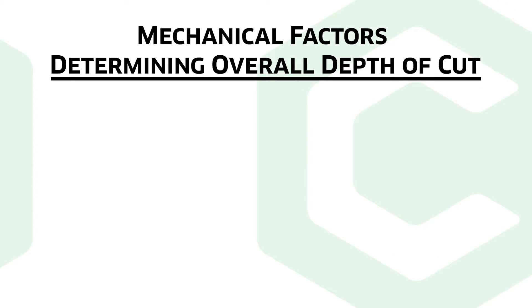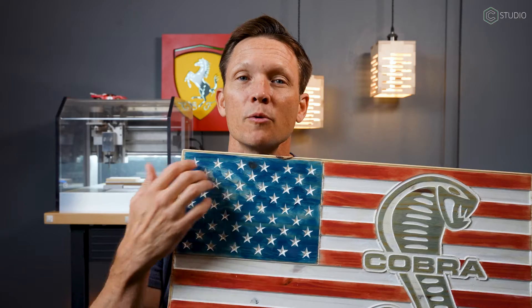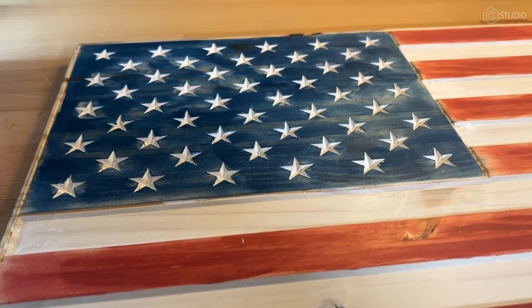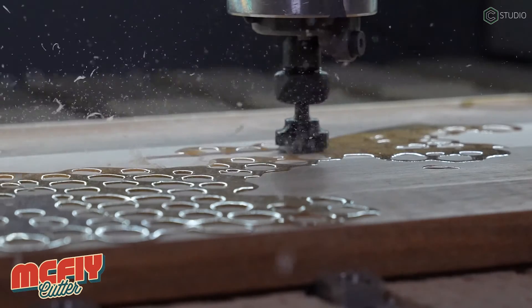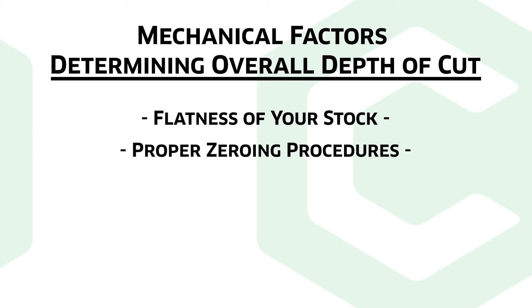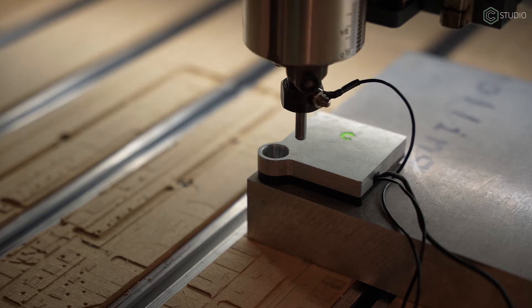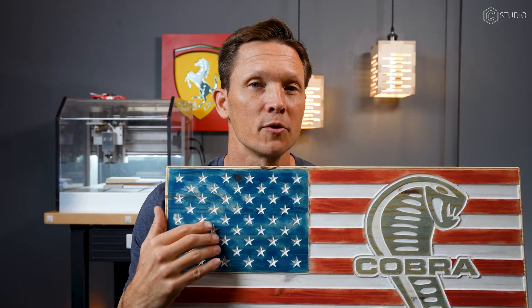There are also a couple of mechanical factors that affect your overall depth of cut. When purchasing a project panel or wood, it may appear completely flat — but that's not always true, especially if you're shopping at a big box store. When you have a field of 50 stars, slight differences become easy to see. You need to face off your material to make them all look the same. Also, your zeroing process needs to be consistent — zero out right on top of the material. You can use a BitZero or the paper method; make your zero exact so your stars come out exactly as drawn.